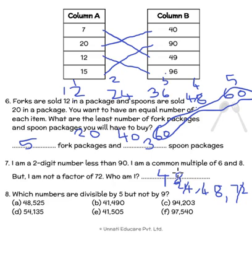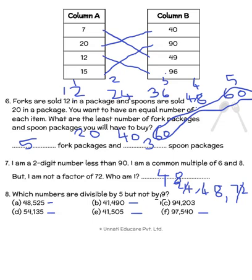Which numbers are divisible by 5 but not by 9? A number is divisible by 5 if its units digit is 5 or 0. For divisibility by 9, add up the digits — if the sum comes in the 9 times table, the number is divisible by 9. For the first option: 4+8+5+2+5 = 24, and 2+4 = 6. 6 does not come in the 9 times table, so this number is divisible by 5 but not by 9 — this is one answer.